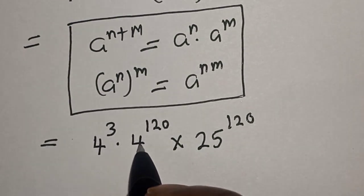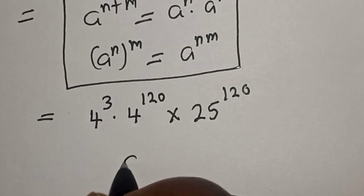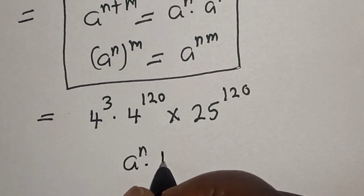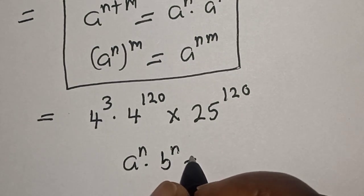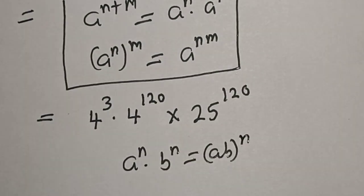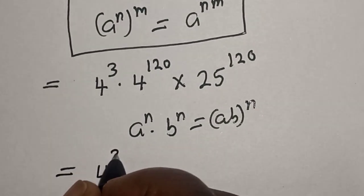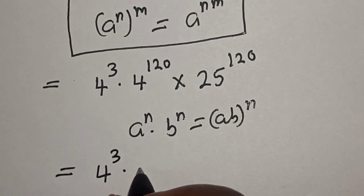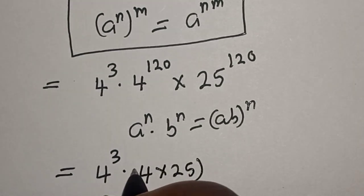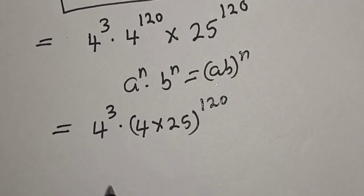Now we have 4 raised to power 120 and 25 raised to power 120. Using the rule that a raised to power n multiplied by b raised to power n equals a times b to the power of n, this becomes 4 raised to power 3 multiplied by the quantity 4 times 25, to the power of 120.